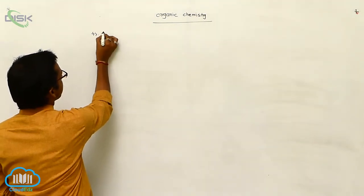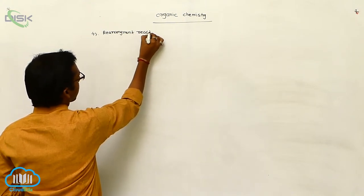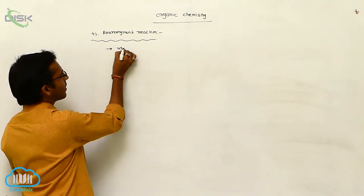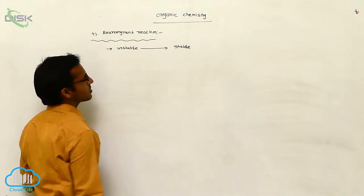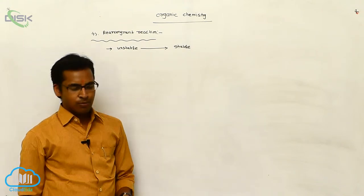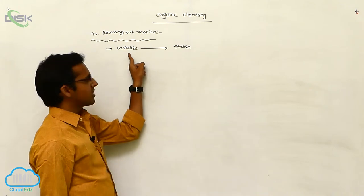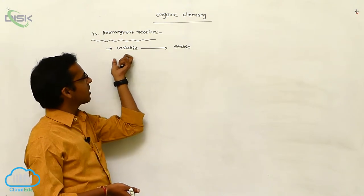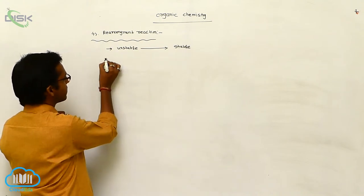In types of reactions, the fourth one is Rearrangement Reaction or Molecular Rearrangement Reaction. In Molecular Rearrangement Reaction, the unstable compound is converted to a stable compound. For example, a primary carbocation is unstable. In carbocations, tertiary carbocation is more stable than secondary than primary. So that primary carbocation is converted to a more stable tertiary carbocation. Such reactions are called Rearrangement Reactions or Molecular Rearrangement Reactions.